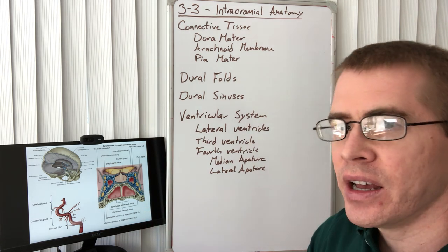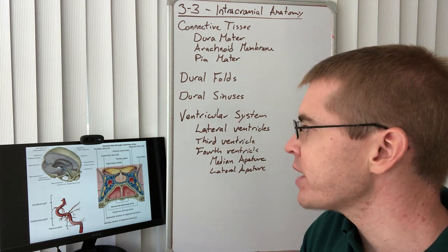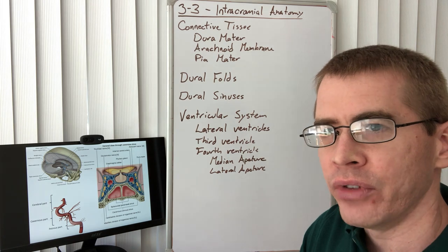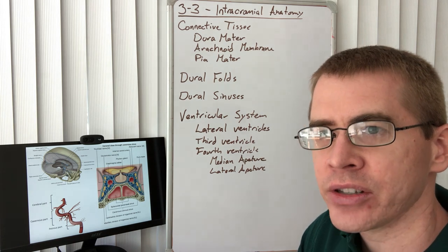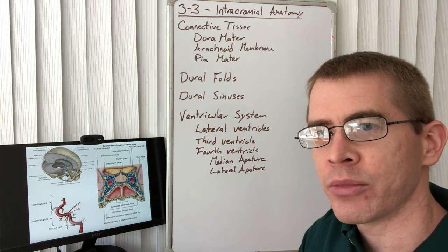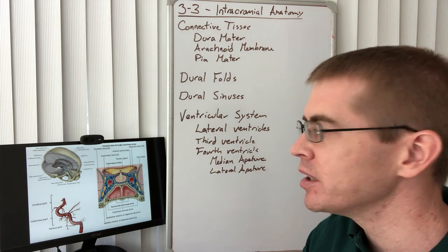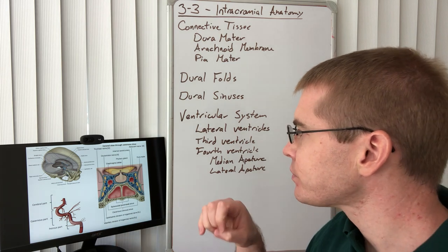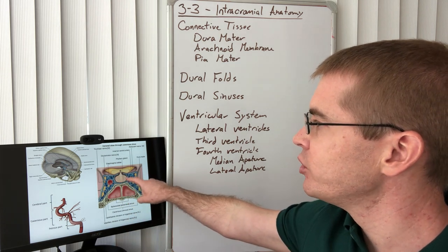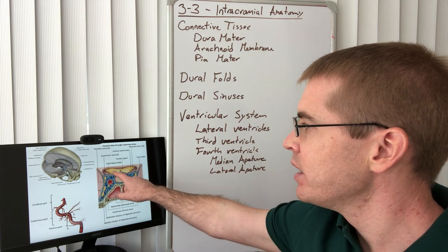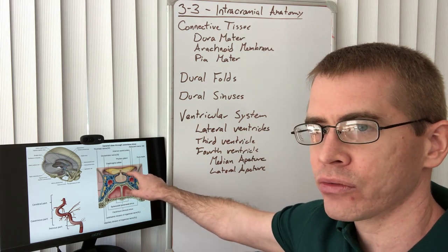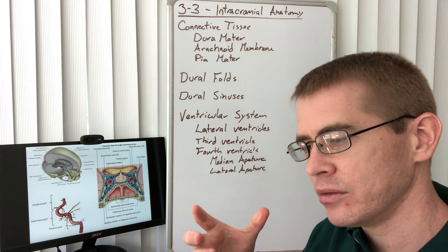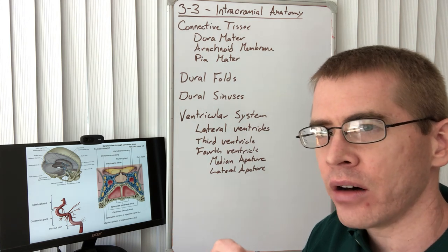The cavernous sinus has important associated structures — numerous cranial nerves travel through it, including CN 3, 4, V1, V2, and 6. V3 does not travel through the cavernous sinus because it travels inferiorly through the foramen ovale. The pituitary gland sits within the cavernous sinus, and the pituitary stalk travels through the optic chiasm. These are landmarks you'll see when looking at the ventral view of the brain.